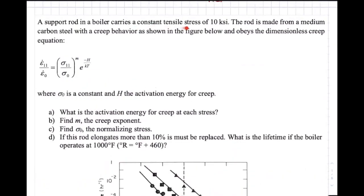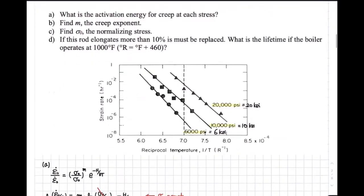We are applying a constant tensile stress of 10 KSI. So when calculating the lifetime, we consider the 10 KSI values. However, for question part A, we have to find the activation energy at each stress, so we consider all three stress values. Note that these graphs can vary — the x-axis could be stress values instead of temperature in some versions — so just make sure you're finding the correct H and M values.